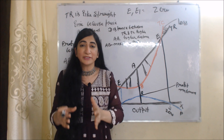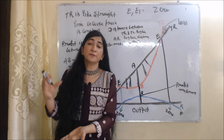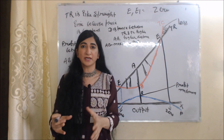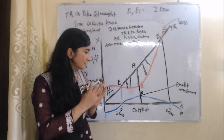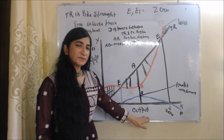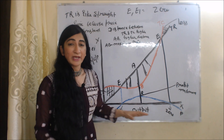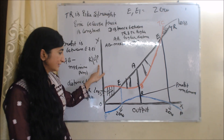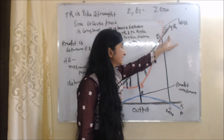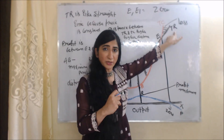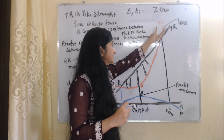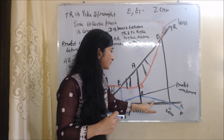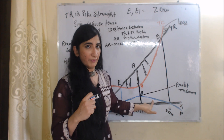With the help of this diagram, we will see where the firm is getting maximum profit. In this diagram, on the X axis we have output, and on the Y axis we have revenue, cost, and profit. The black TR line shows total revenue of the firm, the red TC curve shows total cost of the firm, and the blue PP curve shows total profit of the firm.